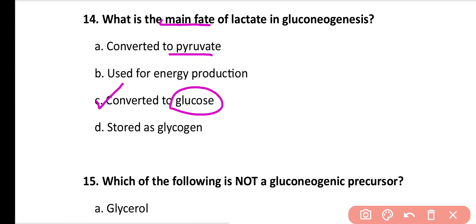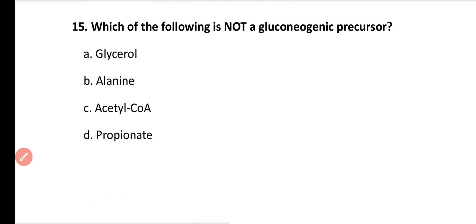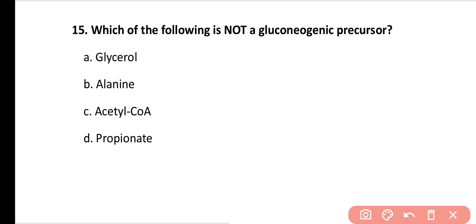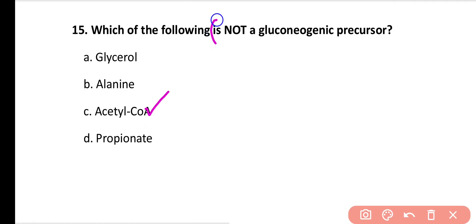Question number 15: Which of the following is not a precursor of gluconeogenesis? Options: pyruvate, lactate, acetyl coenzyme A, propionate. Correct answer is option C. Acetyl coenzyme A is not a precursor of gluconeogenesis.